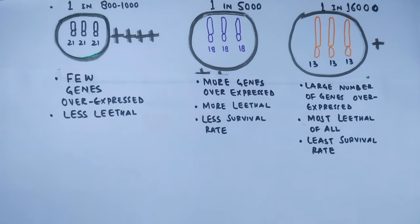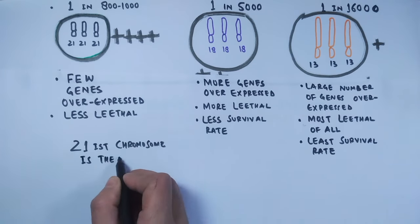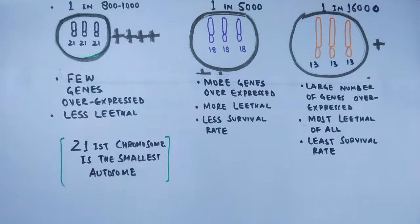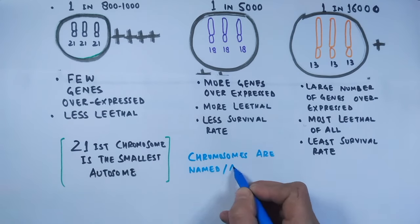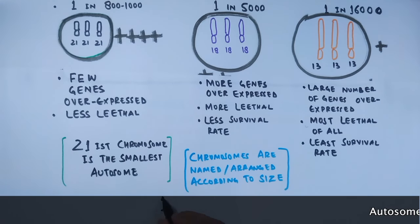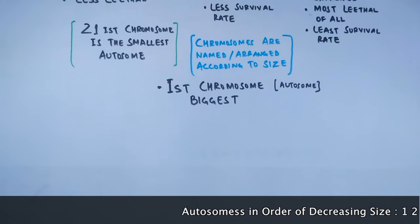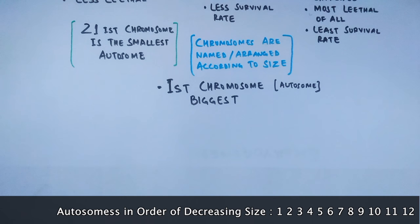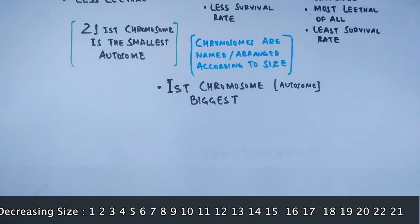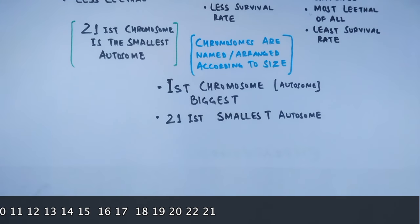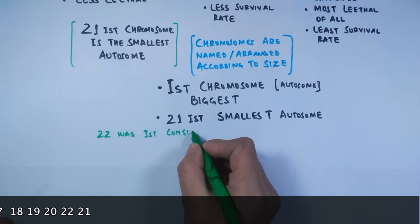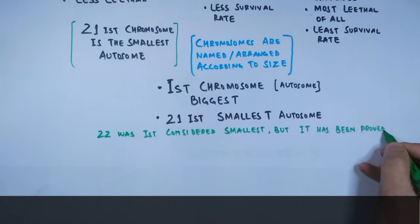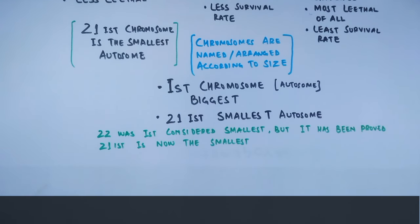It is obvious to ask why fewer genes are overexpressed in Down syndrome and most genes are affected in Patau syndrome. The answer lies in chromosome size. Among the 22 autosomes, the 21st chromosome is the smallest chromosome in our body. Chromosomes are arranged and named according to their size, so the first chromosome is the largest. However, the 22nd autosome is not the smallest — rather, the 21st is the smallest.